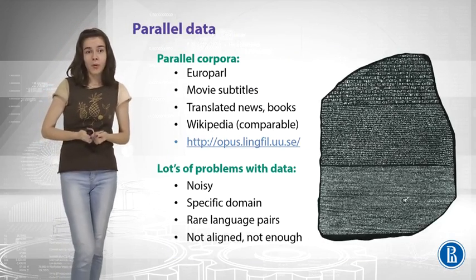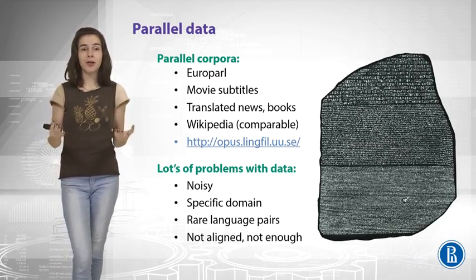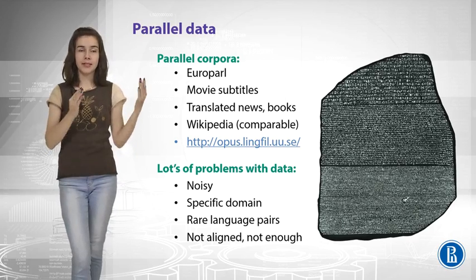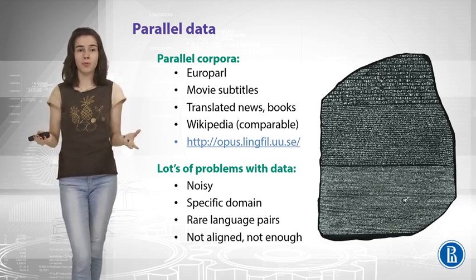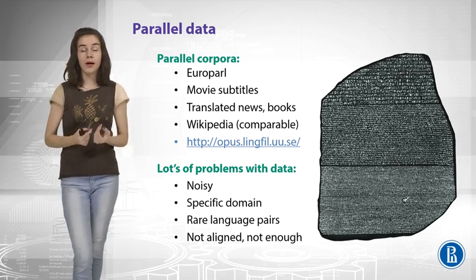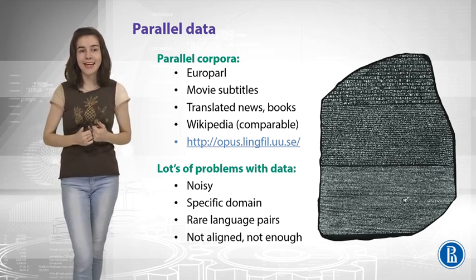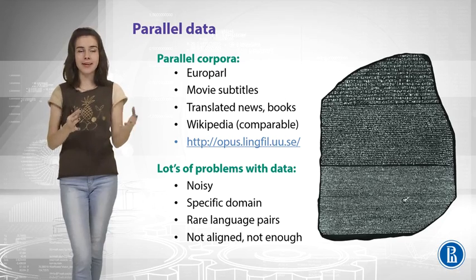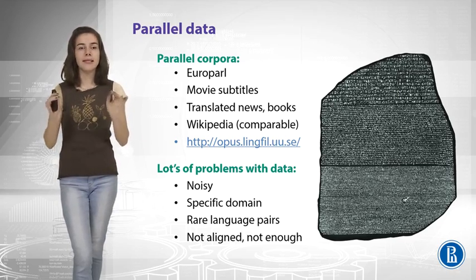What kind of data do we need for machine translation? We need parallel corpora — some text in one language and its translation in another language. One very good source is European Parliament proceedings, where you have texts in about 20 languages with very exact translations of the same statements.